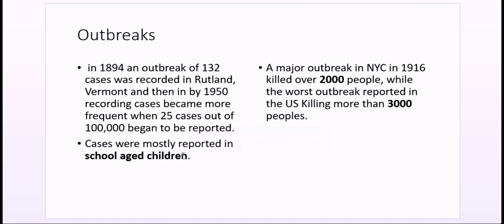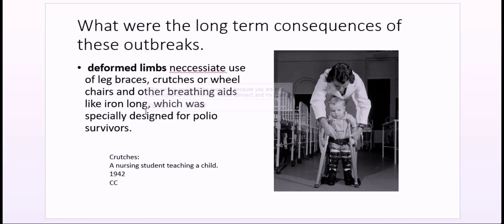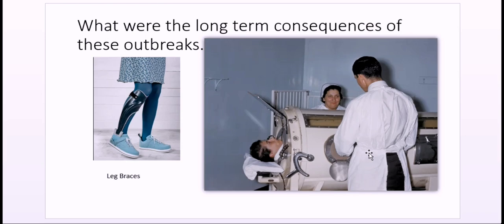A major outbreak in New York in 1916 killed over 2,000 people, while the worst outbreak reported in the US killed more than 3,000 people. Deformed limbs were a major sign of polio, necessitating the use of leg braces, crutches, or wheelchairs. In severe cases, breathing aids were required — artificial lung machines — which were first used in Sweden, marking the beginning of the modern intensive care unit system. Even today, there is one polio patient in the United States who has been breathing with the help of a lung machine for 32 years.